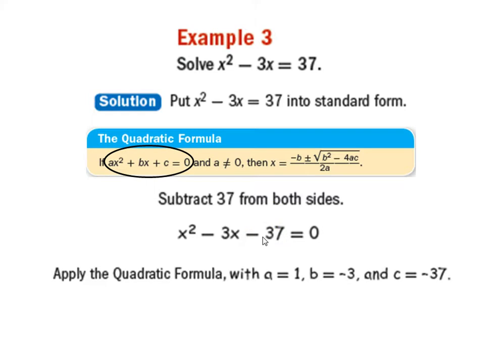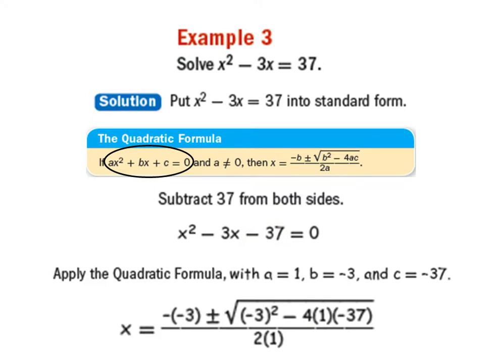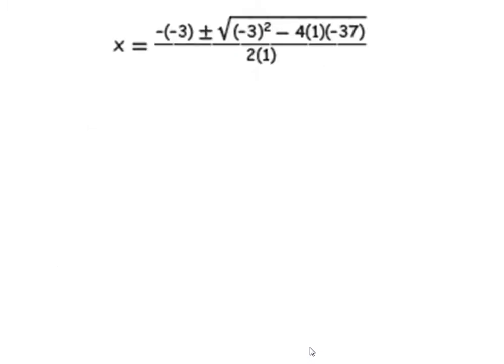So we have those values. We're going to plug them into the quadratic formula, which will look like this. This mess right here is the quadratic formula, where all of our values are now plugged in. x equals negative b, because b is negative 3. So negative b plus or minus the square root of b squared minus 4 times a times c, whole thing divided by 2 times a.